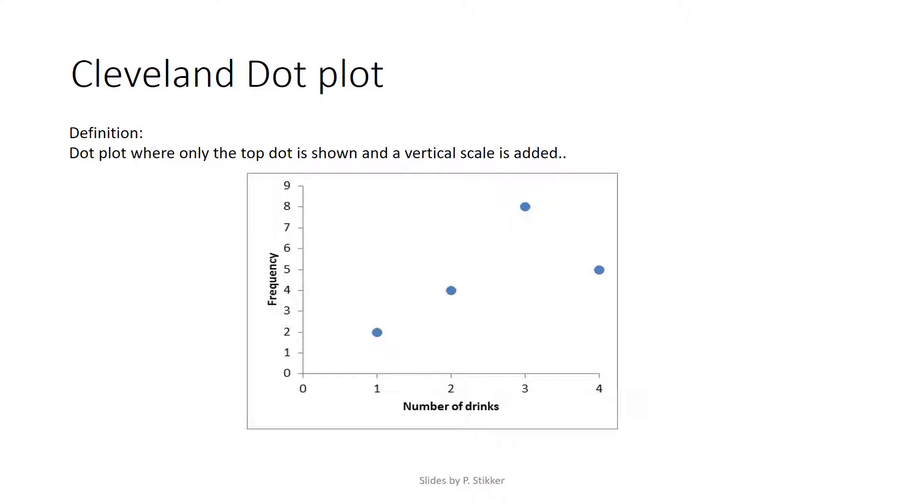A Cleveland Dot Plot is a slight variation on the original dot plot. Instead of having a dot for each and every case, only the highest dot is actually shown. A vertical scale is now required.